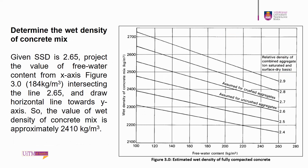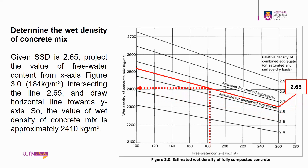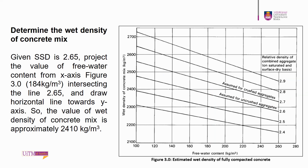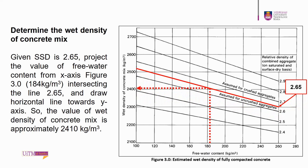Using figure 3.0, given the SSD of 2.65, project the free water content value of 184 kg/m³ from the x-axis, intersecting line 2.65, and draw a horizontal line to the y-axis. The wet density of the concrete mix is approximately 2410 kg/m³. Using equation 4, the total aggregate content is 1909 kg/m³.